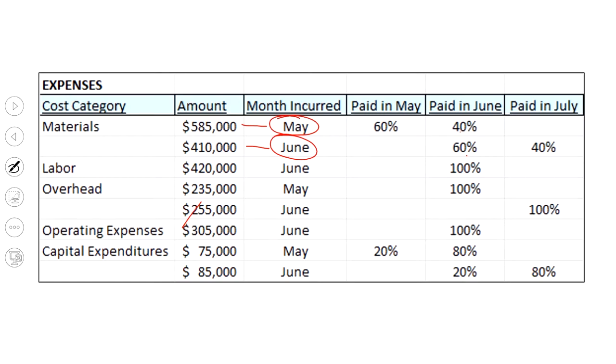Overhead is a split, but there it's 100% incurred and so on. So we have this allocation, here's the accrual basis number, but here's how the money's actually going to go out the door.